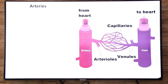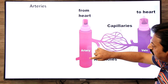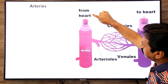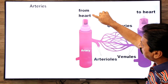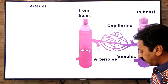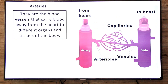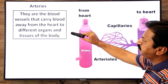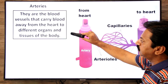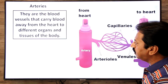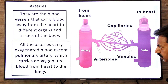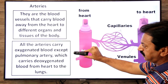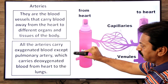Now let's define arteries. Arteries are the blood vessels that carry blood from the heart towards the different organs of the body — they carry blood away from the heart to different organs and tissues. All arteries carry oxygenated blood except the pulmonary arteries, which carry deoxygenated blood from the heart to the lungs.